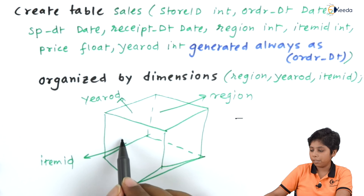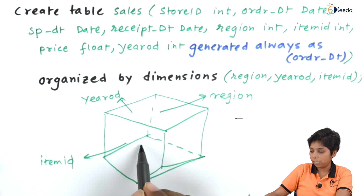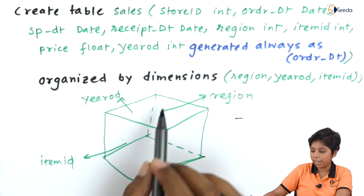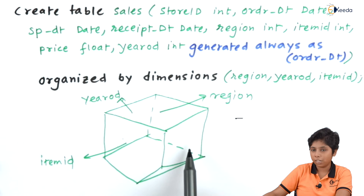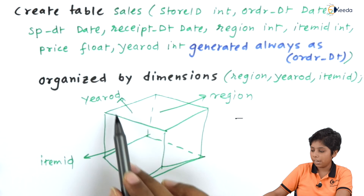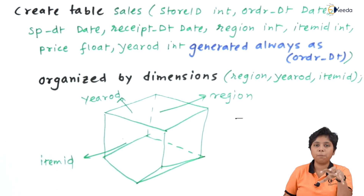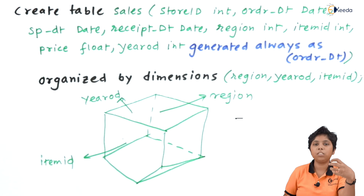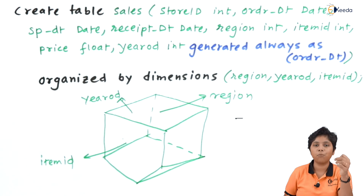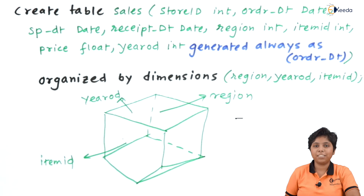In this cube, cross-tabs span region and item_id on one face, year_od and region on another, and year_od and item_id on the third. Because it is multi-dimensional rather than a single dimension, we need to compute a compatibility matrix to store results in this form.